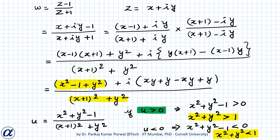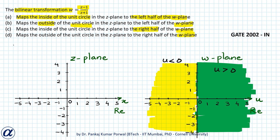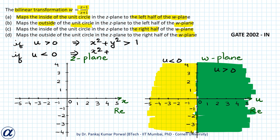So u greater than 0, that is the right half of the w plane, maps to outside of the unit circle, and u less than 0, that is the left half of the w plane, maps to inside of the unit circle. Therefore, inside of the unit circle is mapped onto the left half of the w plane — choice A is correct — and outside of the unit circle is mapped onto the right half of the w plane — choice D is also correct.